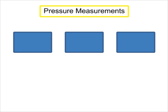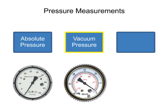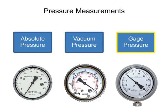Pressure measurements show pressure values that are compared to a reference point. Common scales for pressure measurements include absolute pressure, vacuum pressure, and gauge pressure, and are characterized by the reference pressure used.